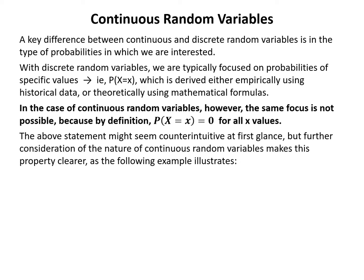A key difference between continuous and discrete random variables is in the type of probabilities we are interested in. With discrete random variables we focus on probabilities of specific values. In the case of continuous random variables, however, the probability that x equals any specific value is always equal to zero for all x values. This might seem counterintuitive at first, but further consideration makes this property clearer as the following example illustrates.